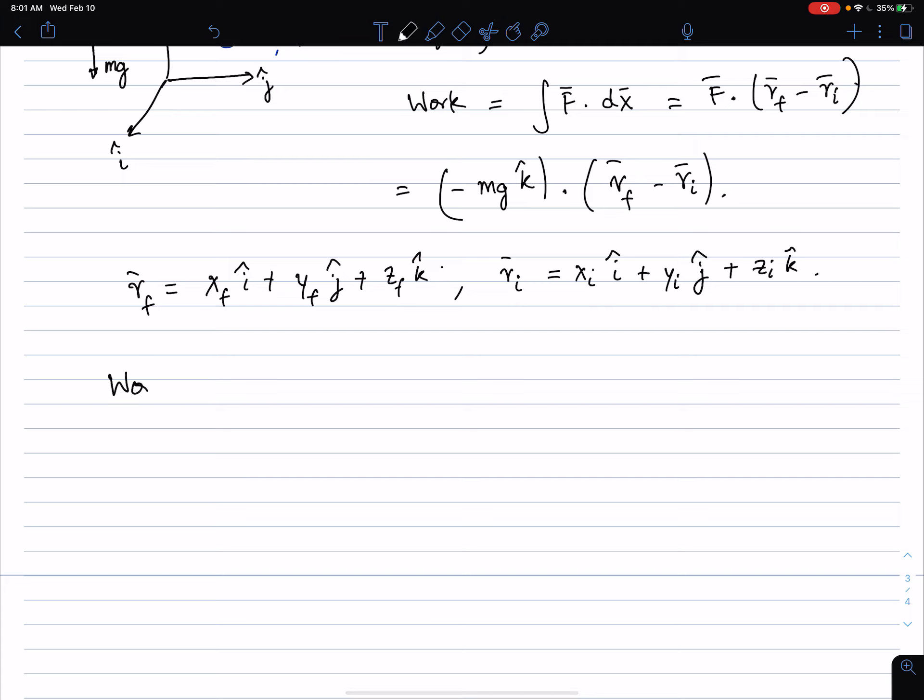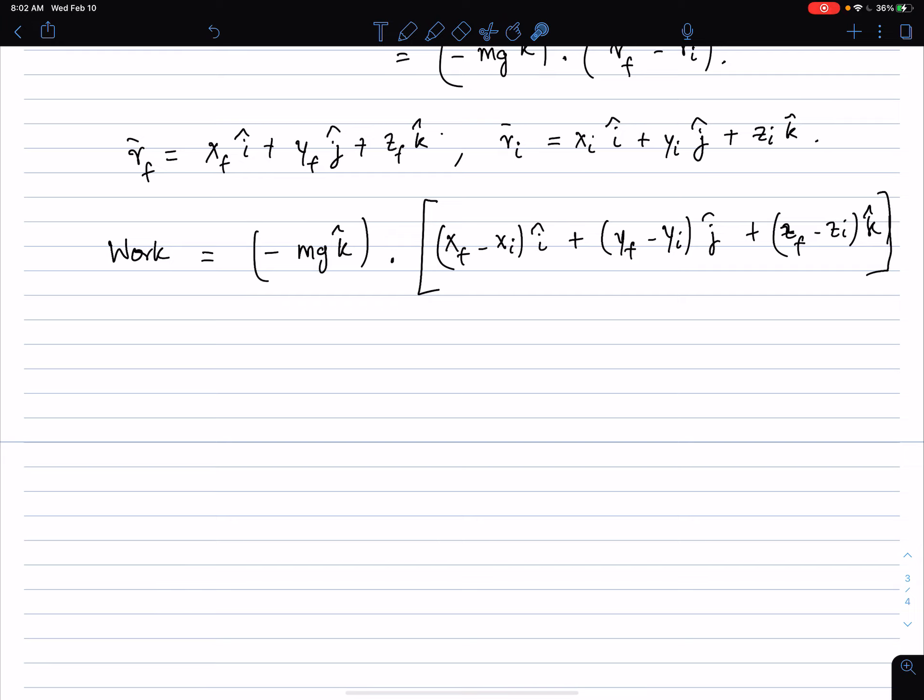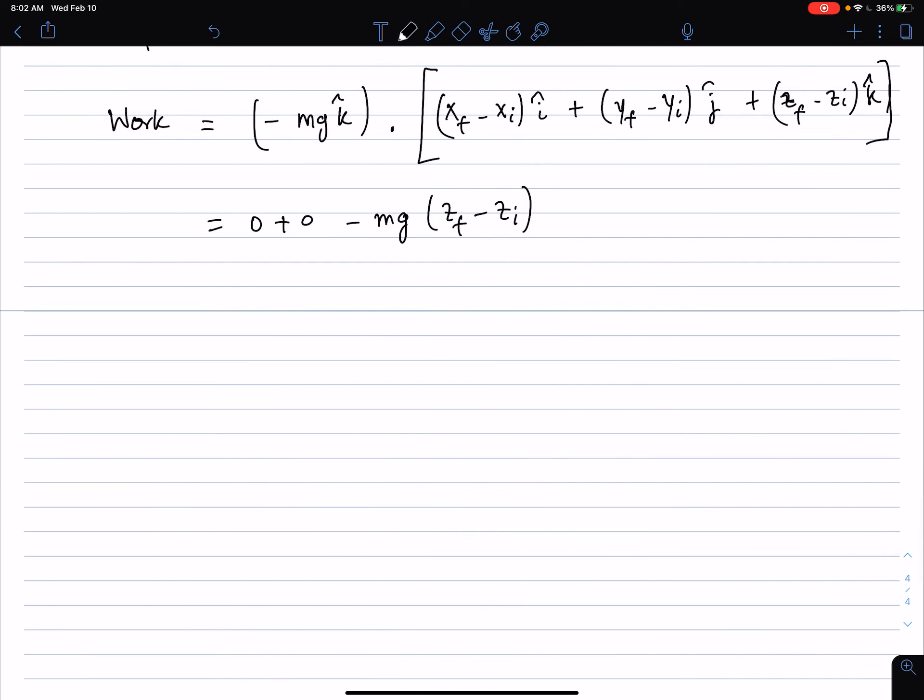So work equals minus mg k dotted with, basically we have (x_f minus x_i) times i plus (y_f minus y_i) j plus (z_f minus z_i) k. And if you take the dot product, you have a k here, you have a j and k here, but the dot product basically means you have 0i plus 0j, and then you multiply the like components, you basically get 0 plus 0 minus mg (z_f minus z_i). So that's basically your work done. So work done by gravity equals minus mg z_f minus z_i. Let me put this on the next page.